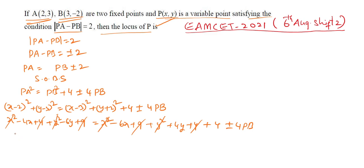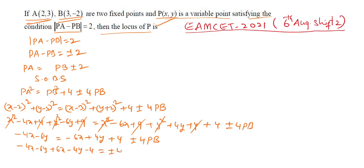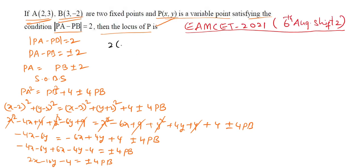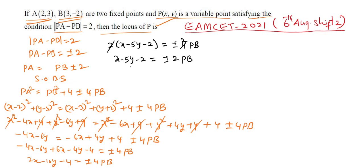After cancelling matching terms on both sides: -4x - 6y = -6x + 4y + 4 ± 4PB. Rearranging: 2x - 10y - 4 = ±4PB. Taking 2 common: 2(x - 5y - 2) = ±4PB, so x - 5y - 2 = ±2PB. Squaring both sides again: (x - 5y - 2)² = 4PB².